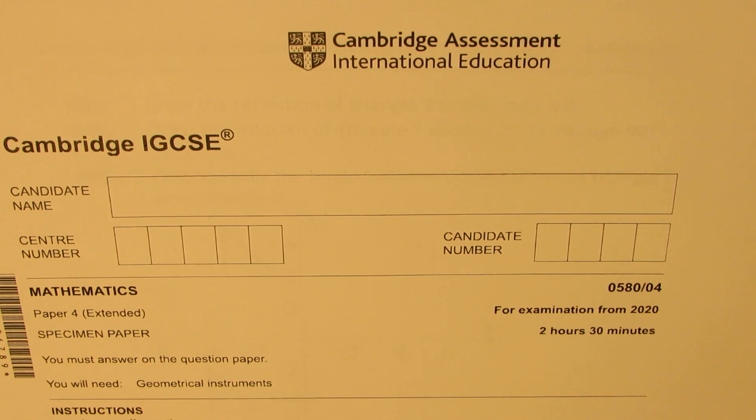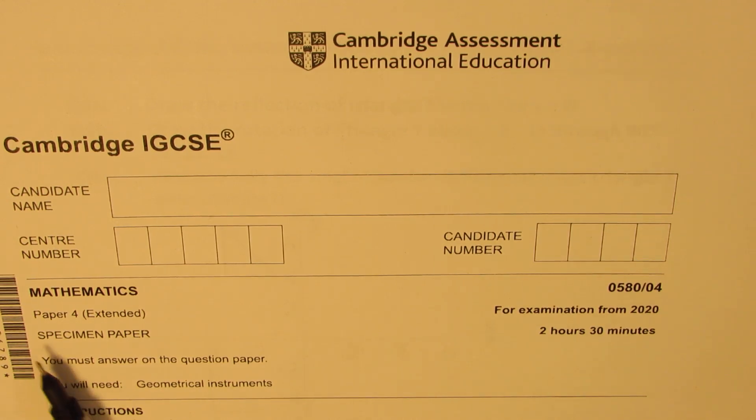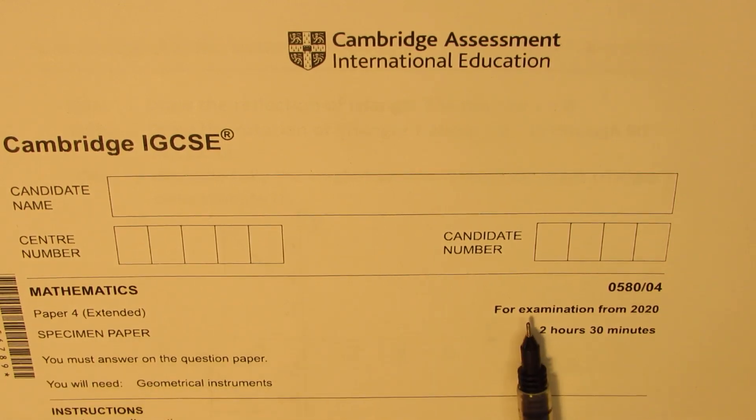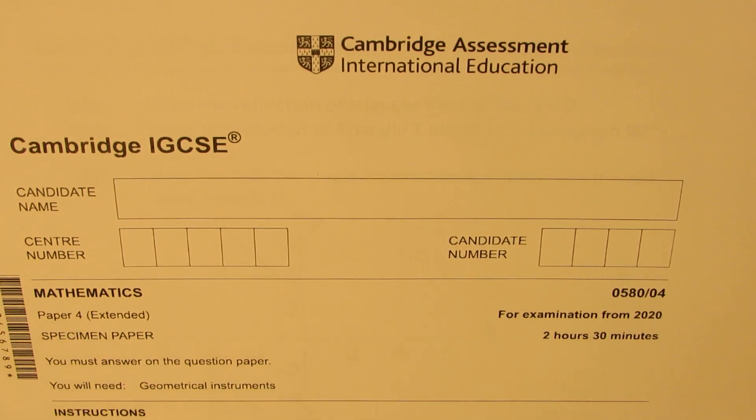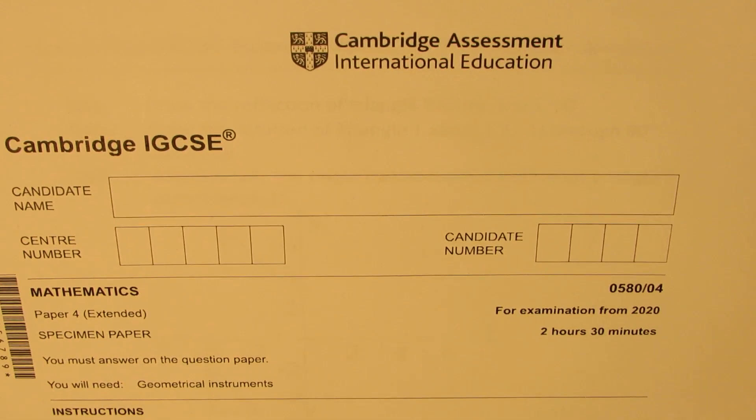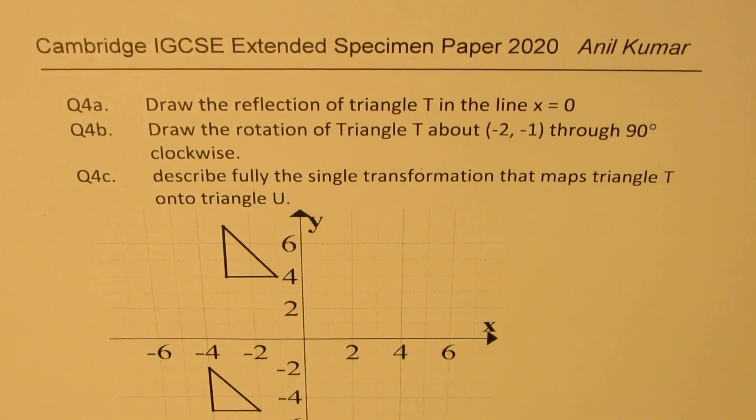This not only helps the students who are appearing for these tests, but also all others to understand the topics better. So, I'm interested in question number 4 from this specimen paper for examinations from 2020, Mathematics paper 4 extended. Let's see and understand how we perform rotation of objects.